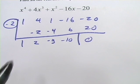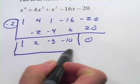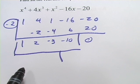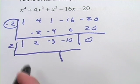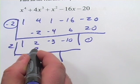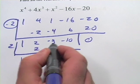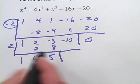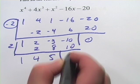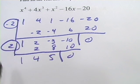And let's see. What should we try next? I think I'm going to try a 2. Ah, yes. Perfect. We got very lucky here. All right. So we've got two of our zeros, negative 2 and 2.